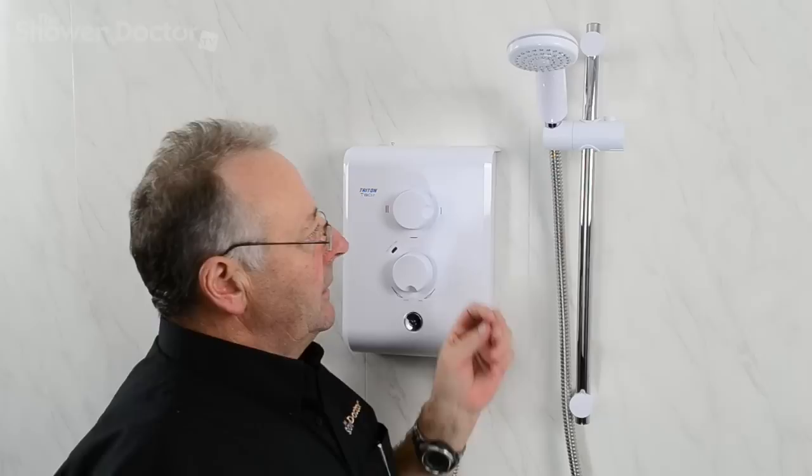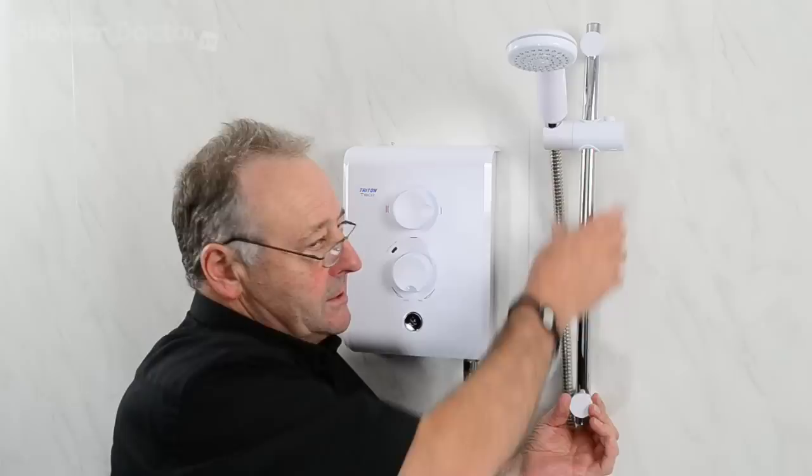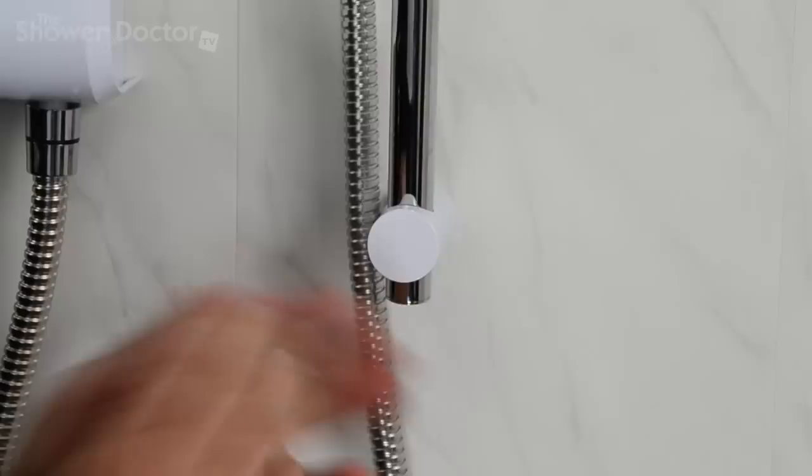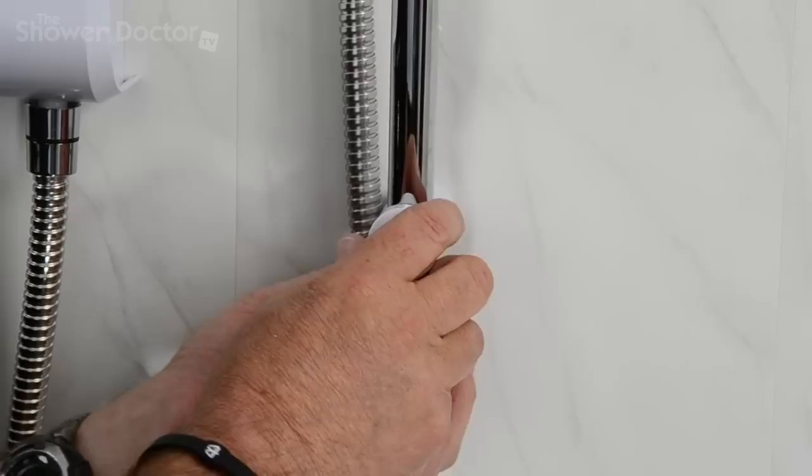So you need to know the diameter of this rail and then we can order the correct sliding bracket. Now to do this job, what you must do is remove the bottom bracket here so that the bracket slides down and off. There's one or two different types of bottom bracket. I'll show you how these are fixed.